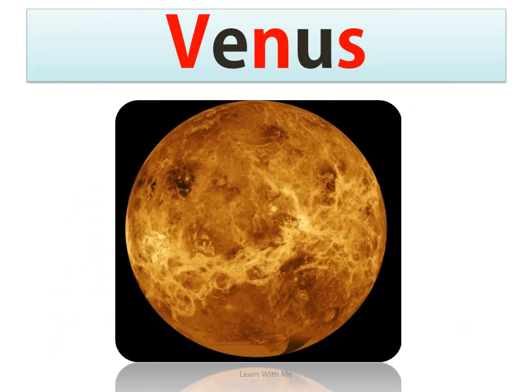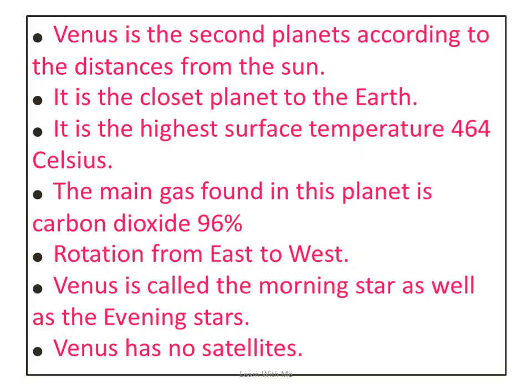Venus is the second planet according to distance from the Sun. It is closer to the Earth and has a very high surface temperature of 464 degrees Celsius. The main gas found on this planet is carbon dioxide at 96 percent. Venus rotates from east to west and is called the morning star as well as the evening star. Venus has no satellite.